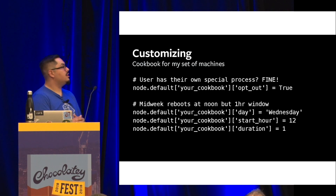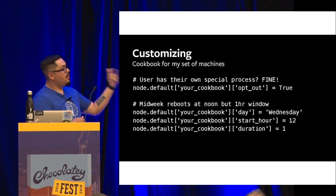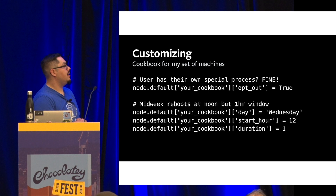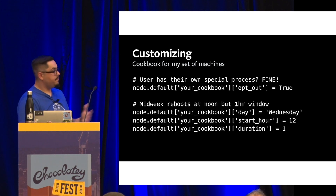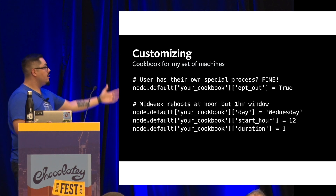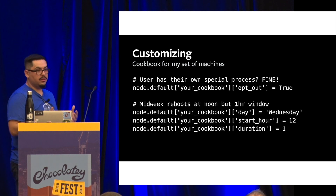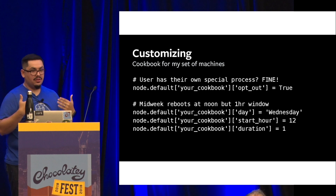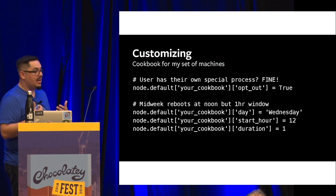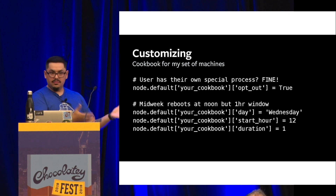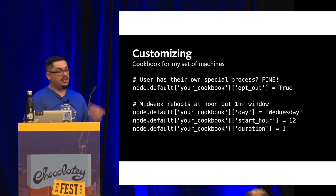Here's how somebody would customize their cookbook. In their own cookbook recipe, they would go in and add their settings. The top example is a team that decided to completely opt out — totally fine. On the bottom, we have a team that decided to reboot their machines at noon for one hour. I would never reboot my machine at noon for one hour, but I don't own their service — I don't necessarily know when the best time for them is. So they can go and submit this and choose for themselves.